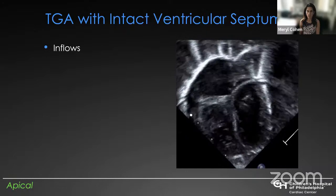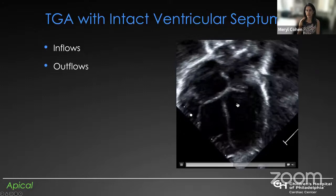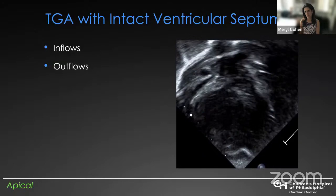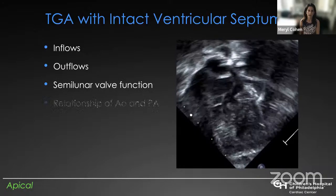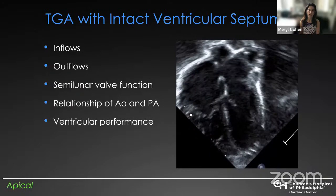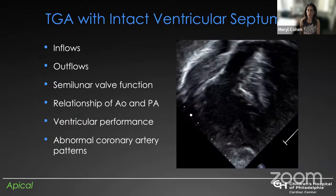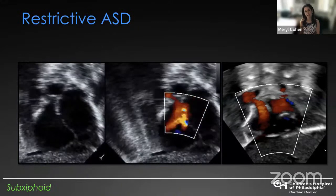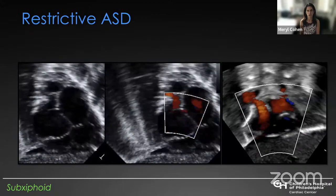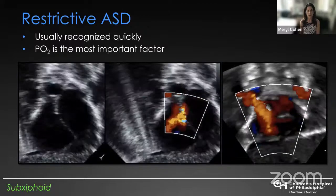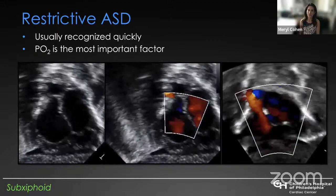The parasternal long axis view is also good for evaluating the left ventricular outflow tract, which is vulnerable to obstruction in patients with transposition. The four-chamber view is remarkable for looking relatively normal, and if you do a fetal echo and only do a four-chamber view, you will often miss the diagnosis. You can assess semilunar valve function, the relationship of the aorta and PA, ventricular performance, and get hints about potential abnormal coronary artery patterns.